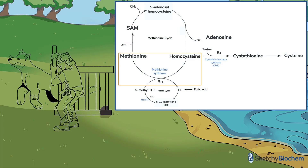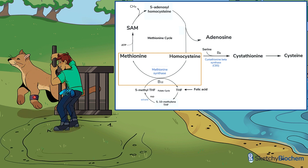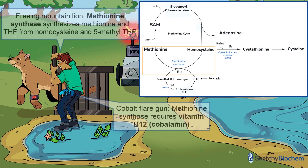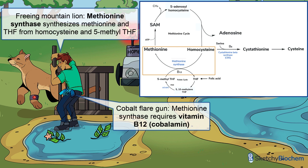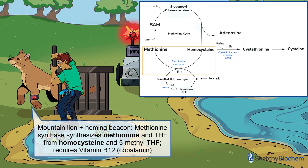In order to make methionine, methionine synthase transfers a methyl group from 5-methyl-THF to homocysteine. This step requires vitamin B12, and the other product is THF. The man freeing a mountain lion is methionine synthase. His cobalt flare gun will help you remember vitamin B12, or cobalamin. Remember that the mountain lion is our recurring symbol for methionine.